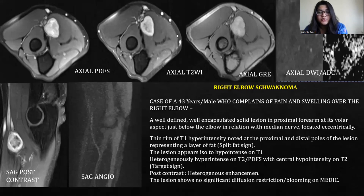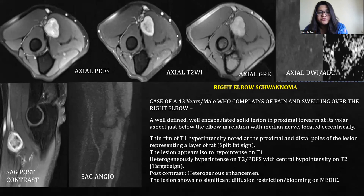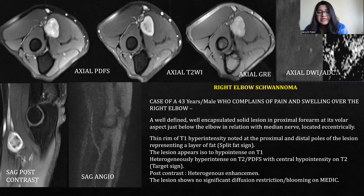Discussing a case of a 43-year-old male with complaints of pain and swelling over the right elbow. Images provided include axial PDFS, T2-weighted, GRE, diffusion restriction images, and sagittal post-contrast and angio images. A well-defined, well-encapsulated solid lesion is seen in the proximal forearm at the volar aspect just below the elbow, in relation with the median nerve, located eccentrically. A thin rim of T1 hyperintensity was noted at the proximal and distal poles of the lesion representing a layer of fat — the split fat sign. The lesion appears iso to hypointense on T1, heterogeneously hypointense on T2 and PDFS with central hypointensity on T2-weighted images. Post-contrast shows heterogeneous enhancement and the lesion shows no diffusion restriction or blooming on GRE sequences.